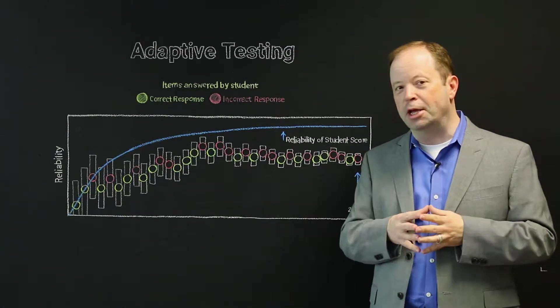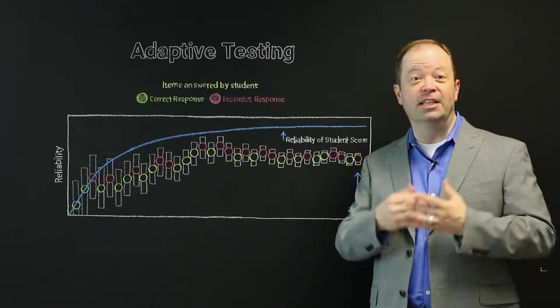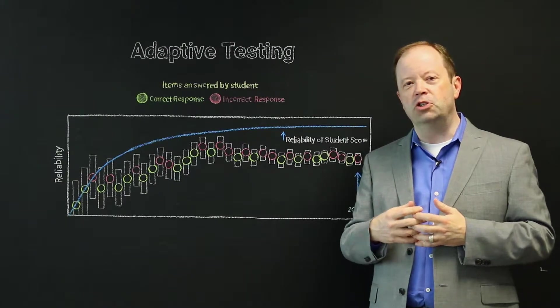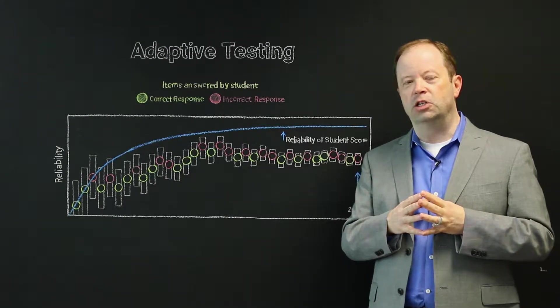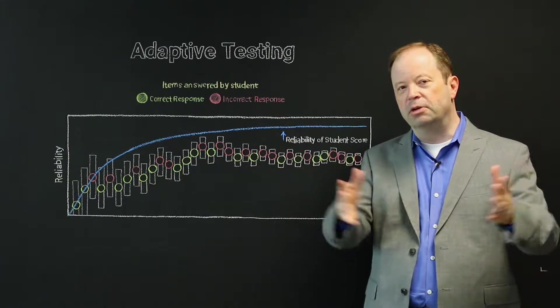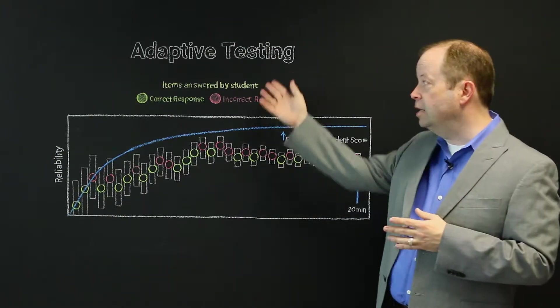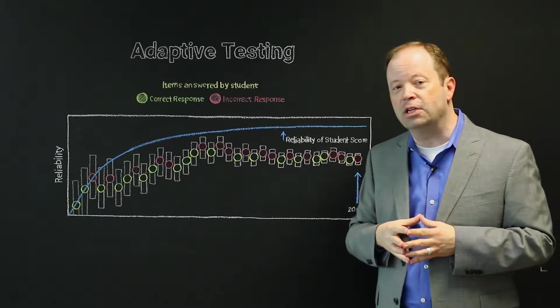In essence, what they're saying is there's almost a face validity issue. It almost doesn't seem valid at face level that such a succinct test could actually provide so much, but there is a very realistic answer about how it can be done, and the answer succinctly is adaptive testing.